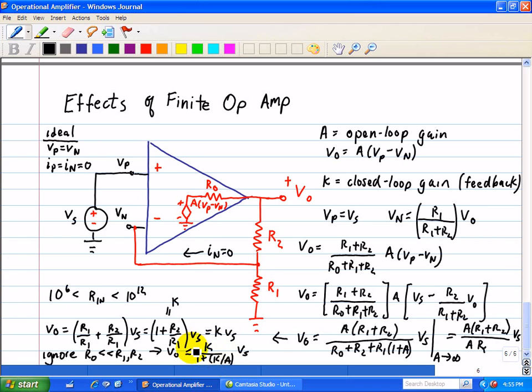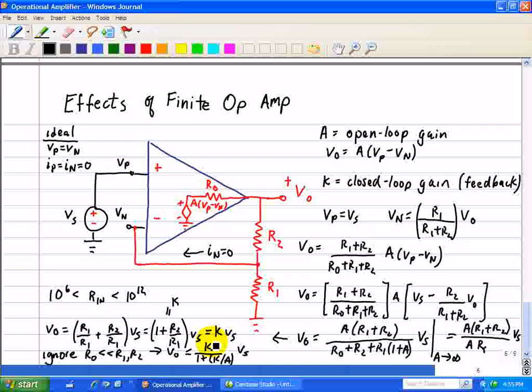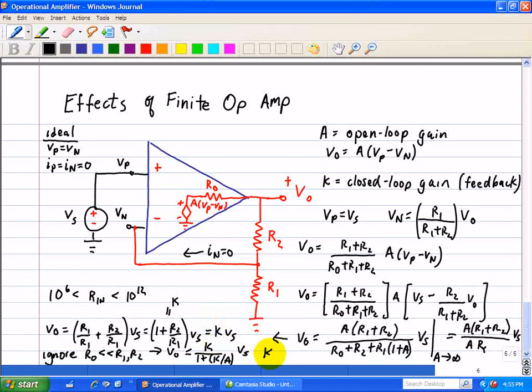So when we write this form we see that the closed loop gain reduces to K as A approaches infinity. Now we see that the finite gain model yields a good approximation to the ideal model as long as K is much smaller than A. In other words that the closed loop gain is a lot smaller than the open loop gain, and that's usually the case that we've seen so far.